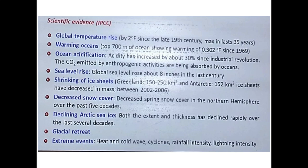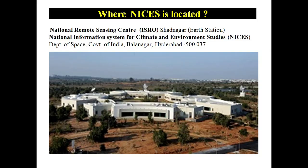The NICES platform — National Information System for Climate and Environmental Studies — provides satellite data regarding various aspects of climate change and how different features of Earth are changing. By observing all the satellite imagery, we can find solutions to different problems related to climate and the environment.